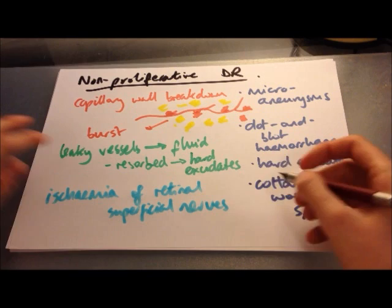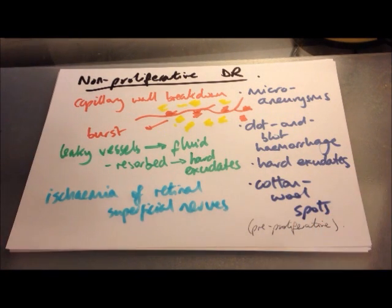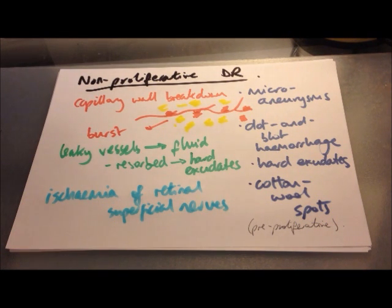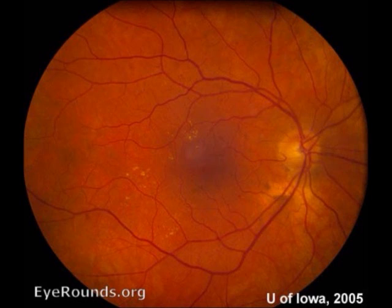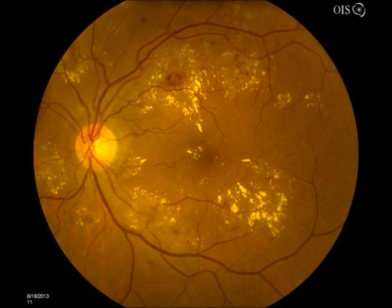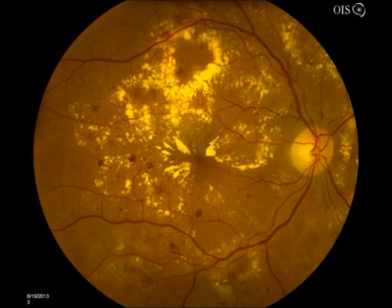Fundoscopy images illustrate these findings. Background diabetic retinopathy shows yellow hard exudates and dot and blot haemorrhages. A second image shows the haemorrhages more clearly — like little ink blots on the fundus. A third image shows cotton wool spots alongside hard exudates and dot and blot haemorrhages, demonstrating how severe non-proliferative diabetic retinopathy can look.